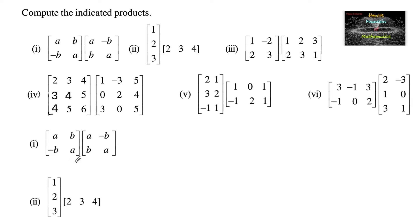The first matrix is of order 2 by 2 and the second matrix is also of order 2 by 2. So the condition for multiplication is possible — the number of columns of the first matrix is equal to the number of rows of the second matrix. So the order of the resulting matrix will be 2 by 2, giving us 4 elements total.